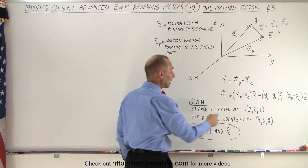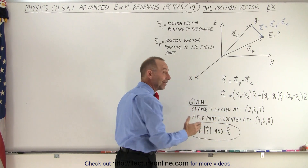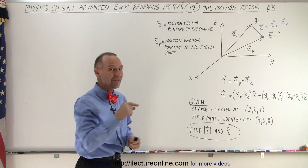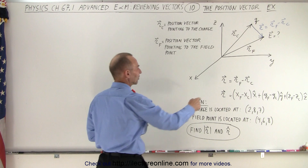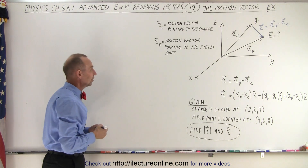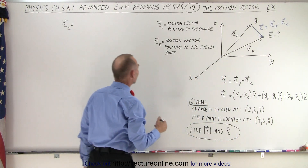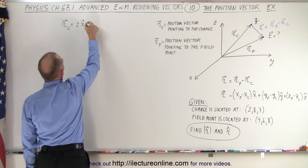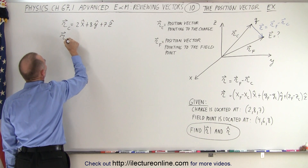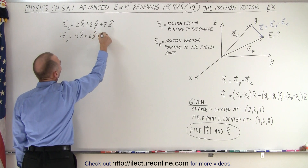Now, when we're given the location of the charge in x, y, and z coordinates and the field point location in x, y, and z coordinates, and asked to find the distance between those two points and the unit vector pointing from the charge to the field position — we start by defining both position vectors. The position vector to the charge has components 2, 8, and 7: that's 2x̂ + 8ŷ + 7ẑ. The position vector to the field point is 4x̂ + 6ŷ + 8ẑ.